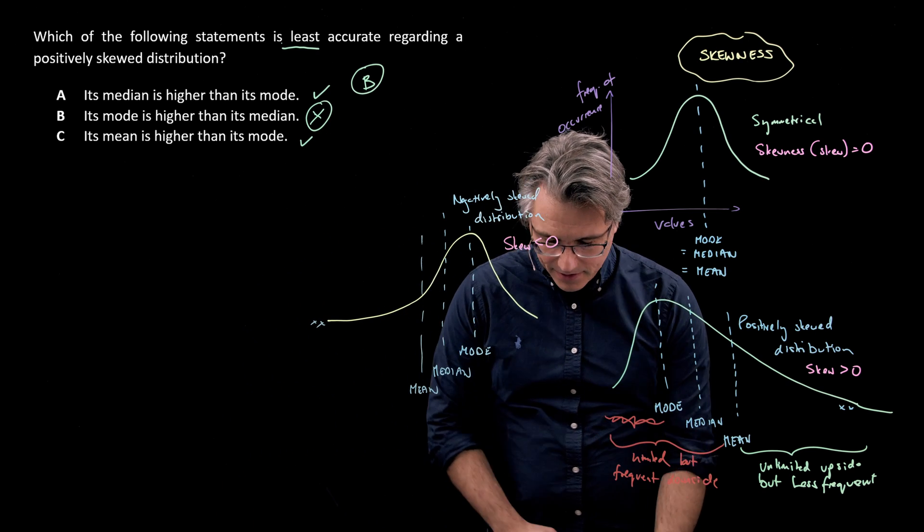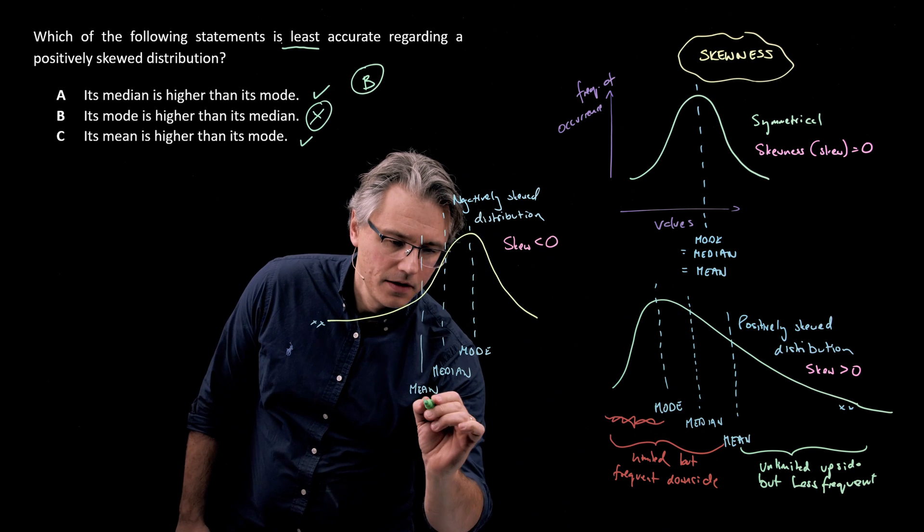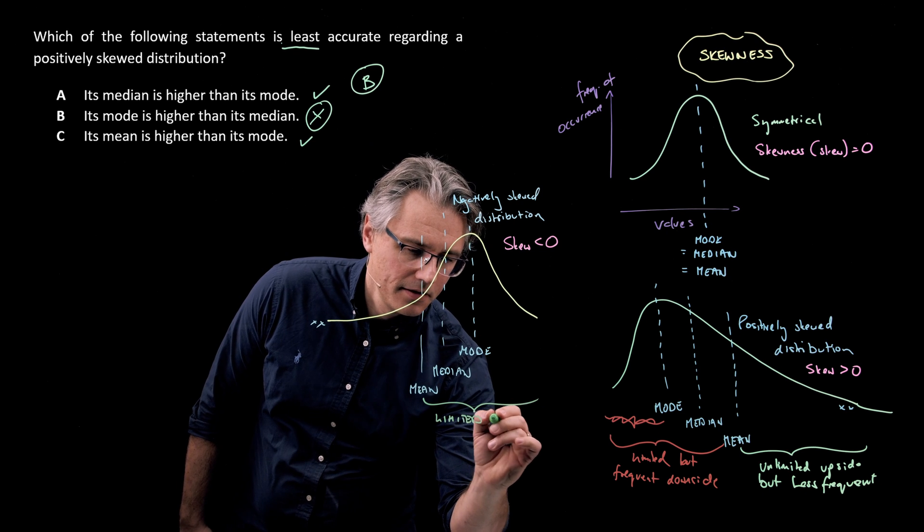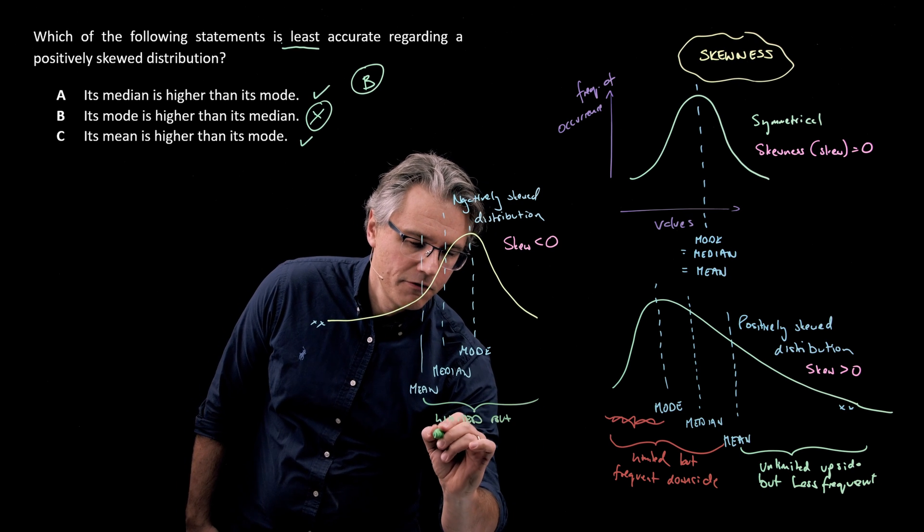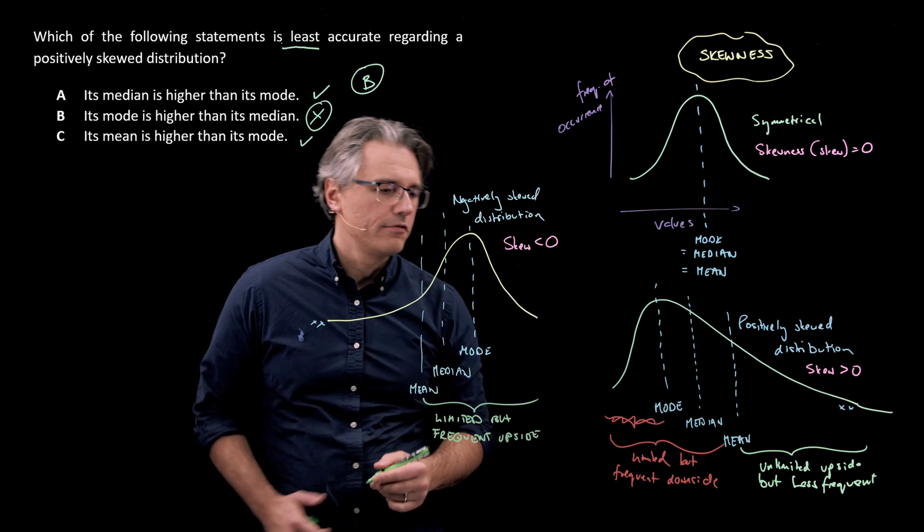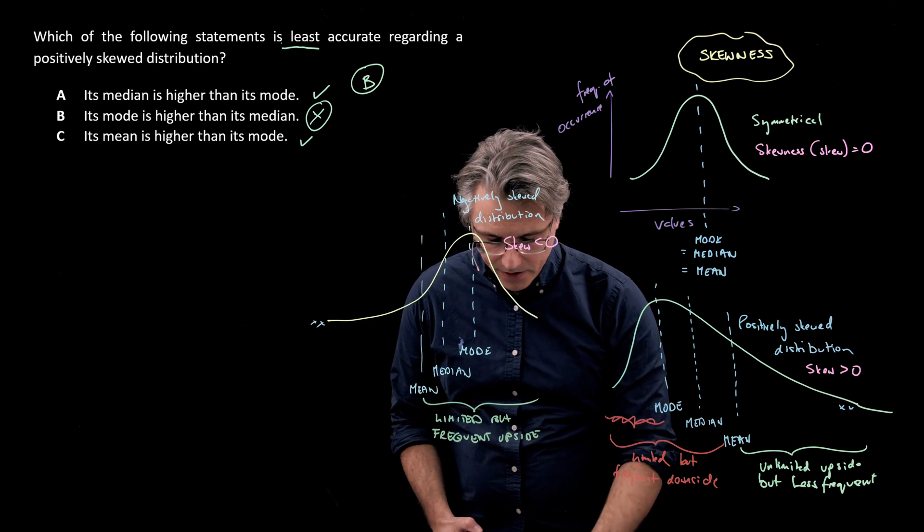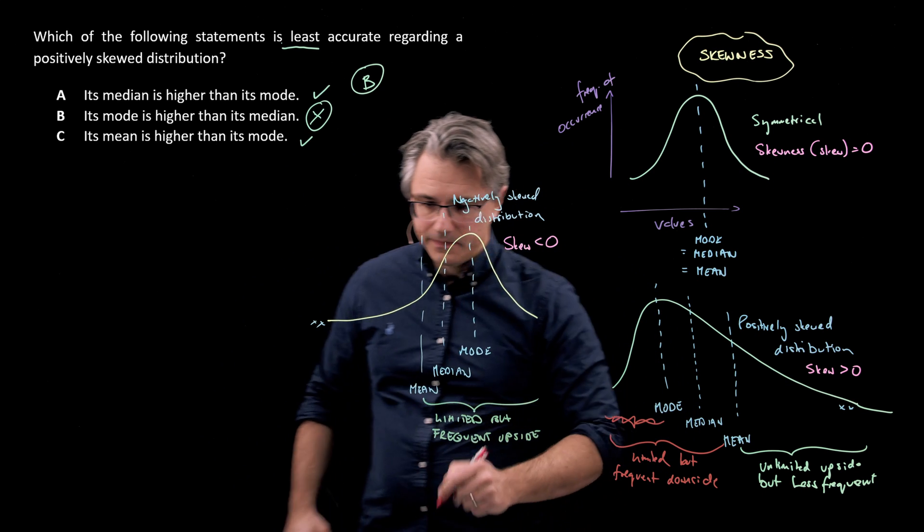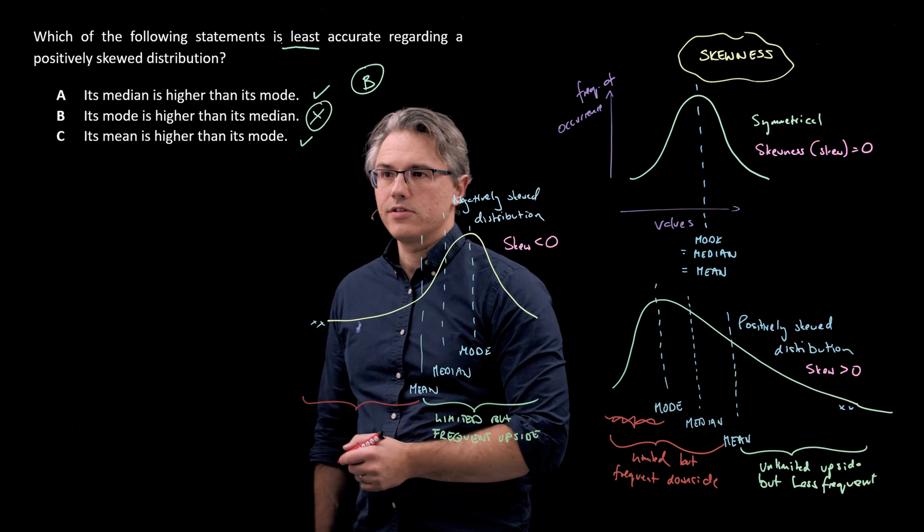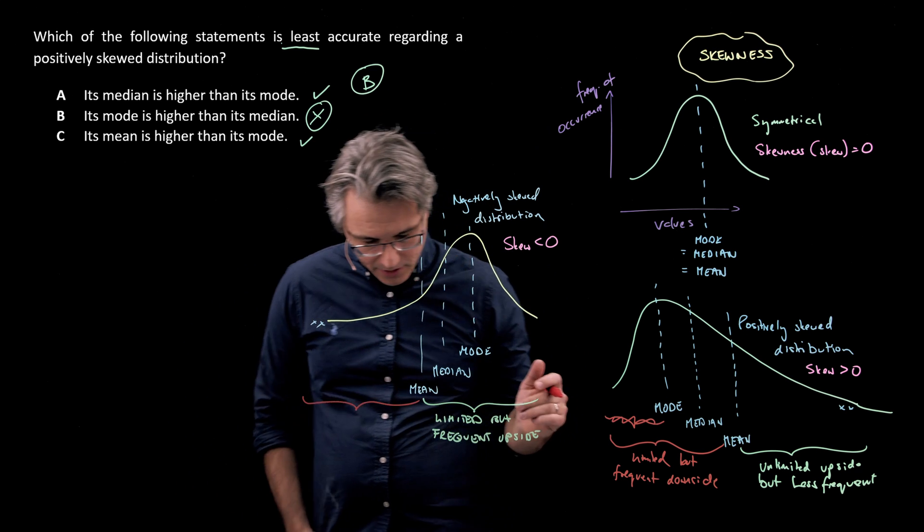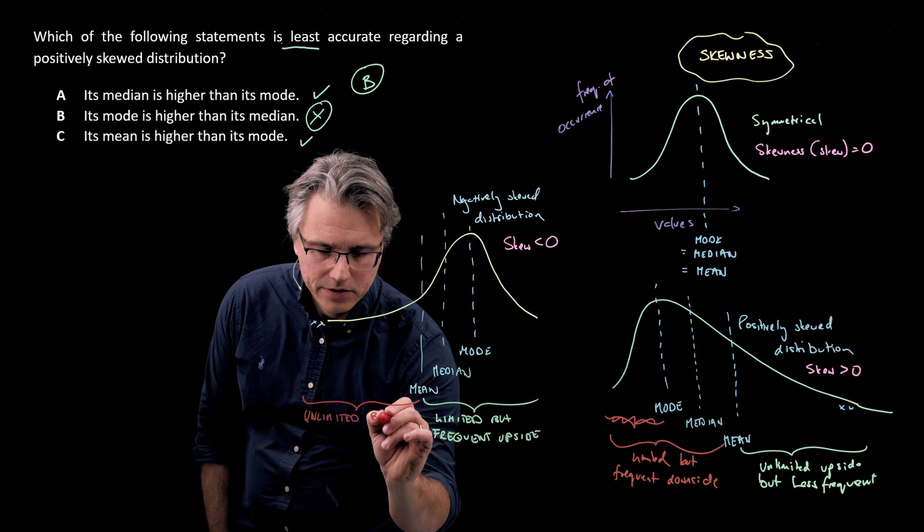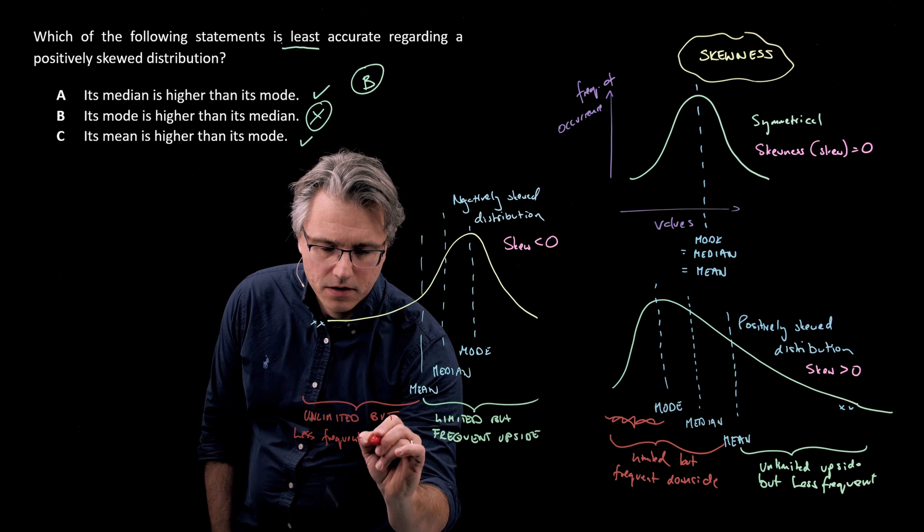And in this case we could say that there is limited but frequent upside potential, so potential for results which are higher than the mean. And at the same time, quite a lot of potential for downside in terms of the magnitude. And let's call this unlimited but less frequent downside.